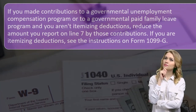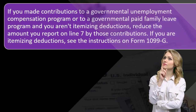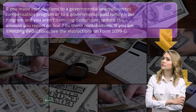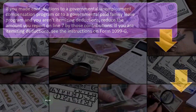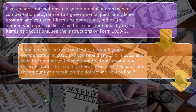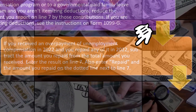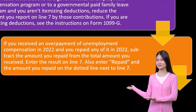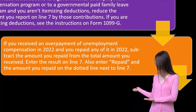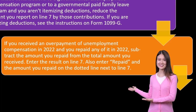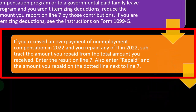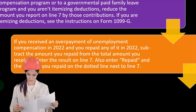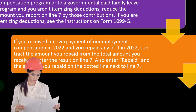If you made contributions to a government unemployment compensation program or government paid family leave program and you aren't itemizing deductions, reduce the amount you report on line seven by those contributions. If you are itemizing, see the instructions for Form 1099-G. If you received an overpayment of unemployment compensation in 2022 and repaid any of it in 2022, subtract the amount repaid from the total received, enter the result on line seven, and also write 'repaid' and the amount on the dotted line next to line seven.